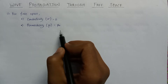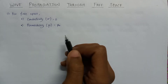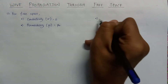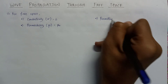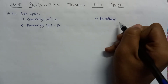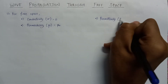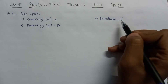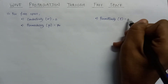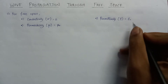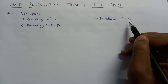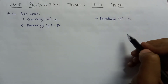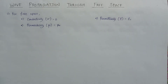The third parameter is permittivity. Permittivity is denoted by the symbol epsilon, and the value of epsilon for free space is always equal to epsilon naught. Here, epsilon naught represents the permittivity for wave propagation in free space. Now let us have a look at some factors associated with wave propagation through free space.